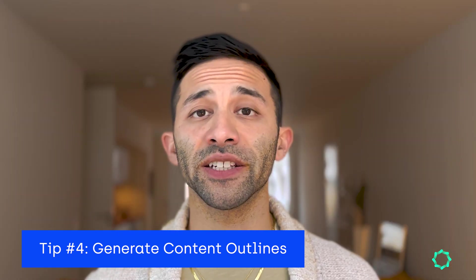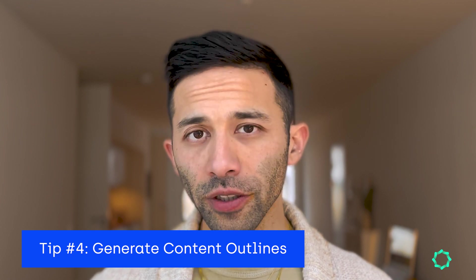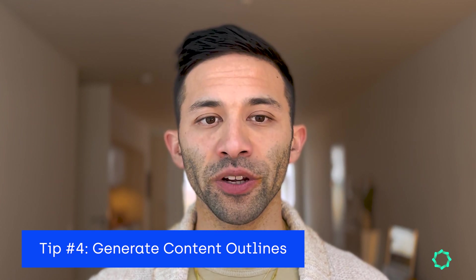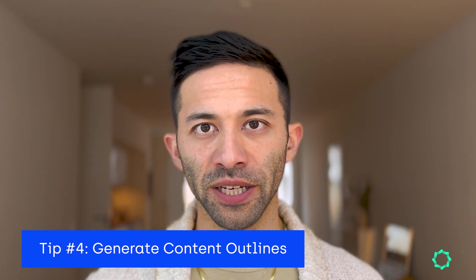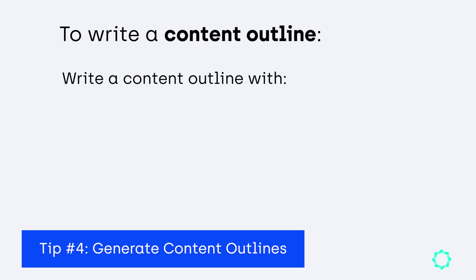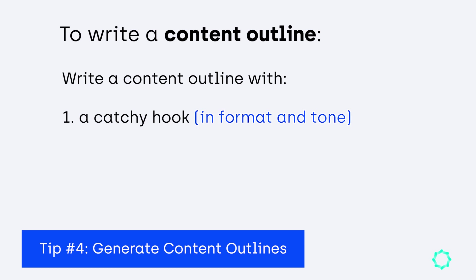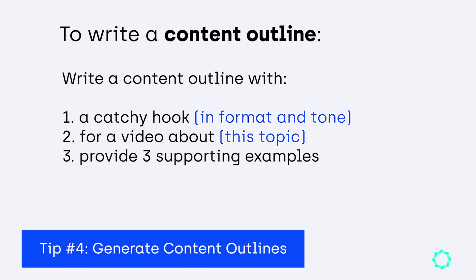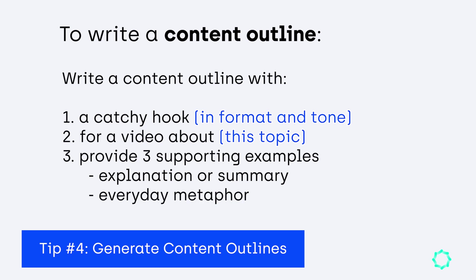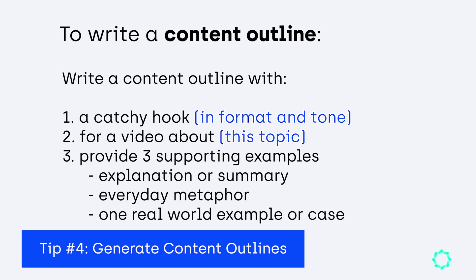A video outline is going to contain three parts: the hook, a key topic, and three supporting examples. My prompt is: write a content outline with the following pieces — a catchy hook in this format and tone for a video about this topic; choose one key topic, task, or skill to explain; provide three supporting examples or data with sources. That includes one explanation or summary, one everyday metaphor, and one real-world example or case study.